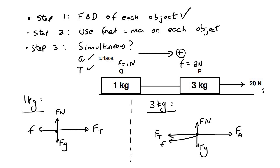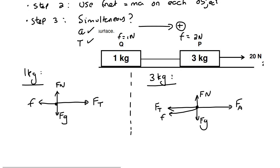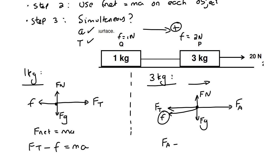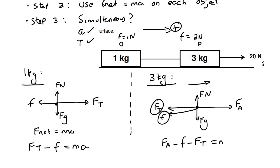Step two: use F_net equals ma on each object. Remember we said the entire system is going to the right. For the one kilogram: F_T is positive and friction is negative, because friction points left while F_T points right — so F_T minus friction equals ma. For the three kilogram: we're still moving to the right, so it's the applied force minus the frictional force minus the tension force equals ma. Note that for different objects the tension force can be positive or negative.